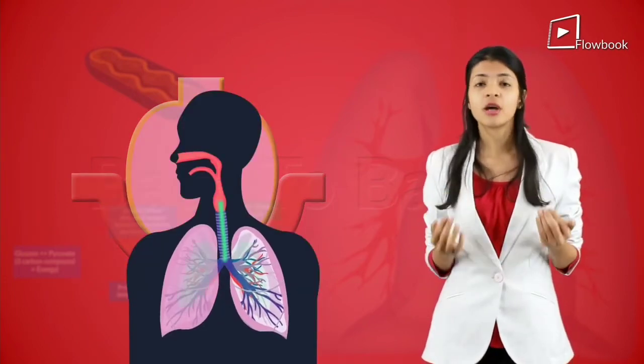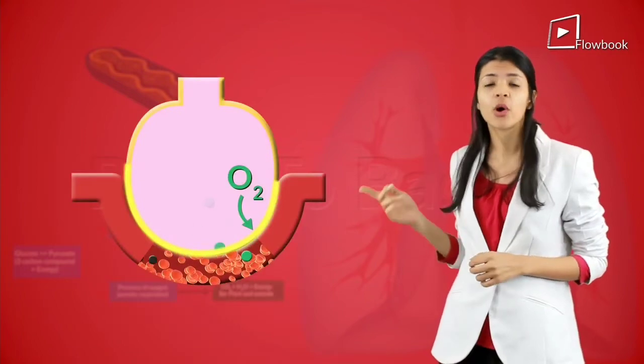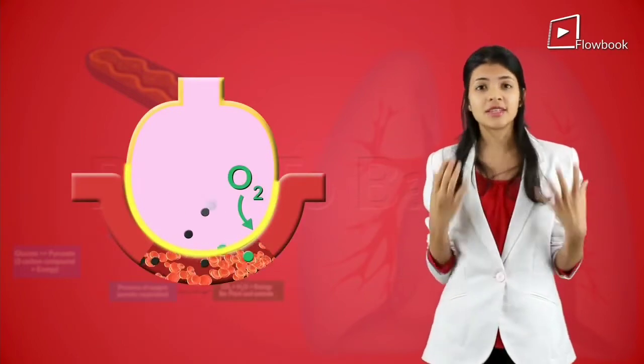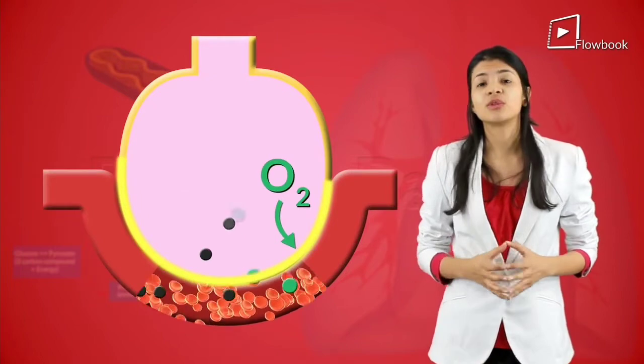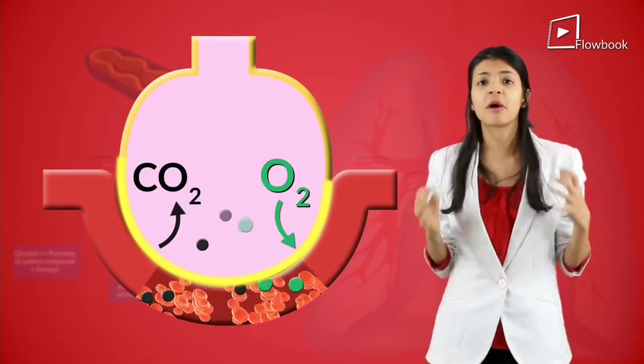When you inhale, you take in oxygen which goes into these alveoli or air sacs. This oxygen gets diffused into the blood which is in the blood capillaries and the carbon dioxide from that blood